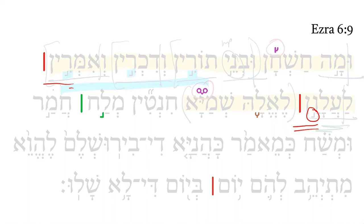It doesn't say much about this one, but notice if this first one is a Munach, the second, third, fourth, fifth — there are five Munachs for a total of six conjunctive accents standing before the Carne Farah. That is very unusual.